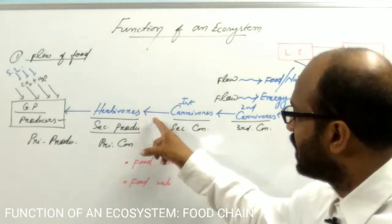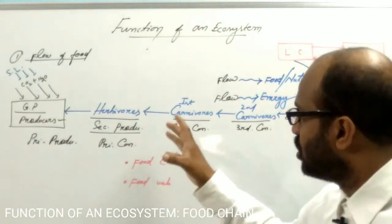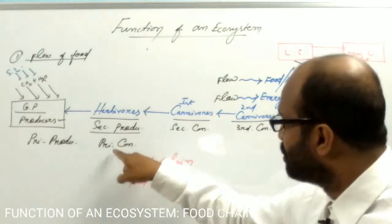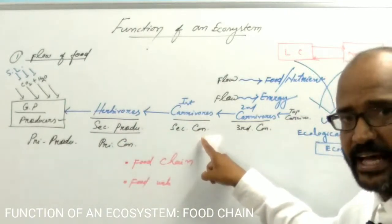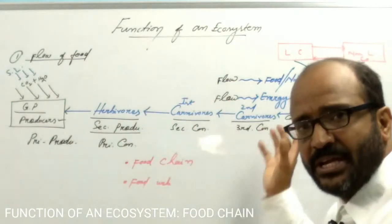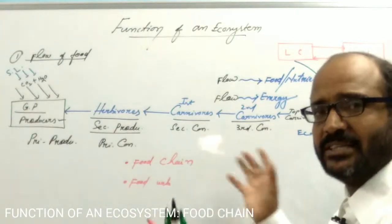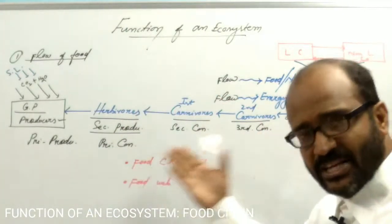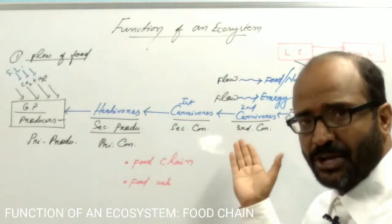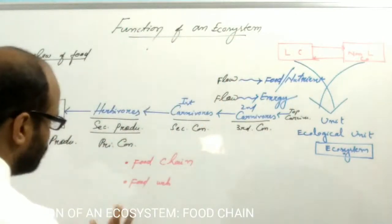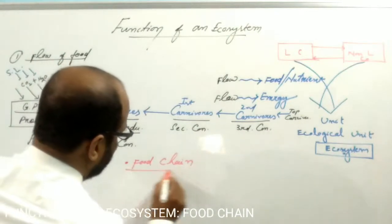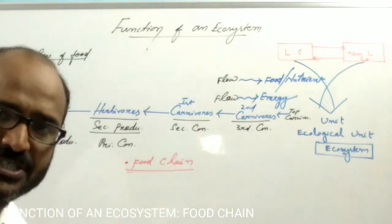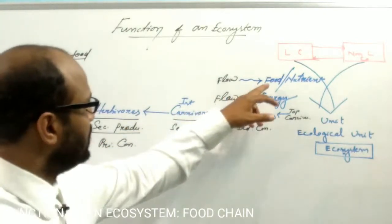The herbivores are the primary consumers — they first consume the producers. Such herbivores become the food of the first carnivore, or the secondary consumers. There is feeding and being eaten by others. Because of this, there is a relationship among the different members of the ecosystem, which is known as the food chain. Food chain is the sequential relationship, the interdependency, because of food.